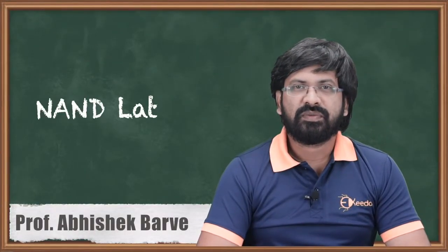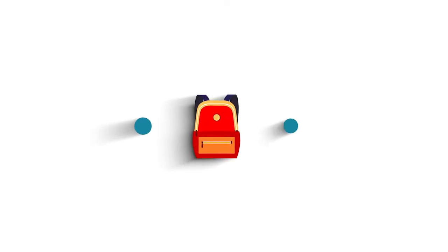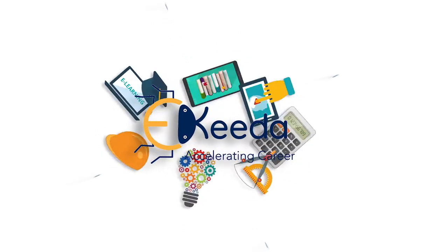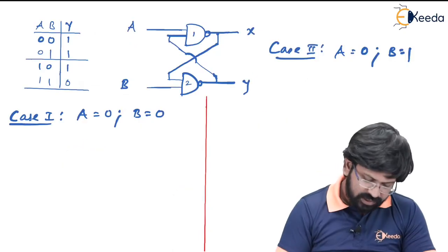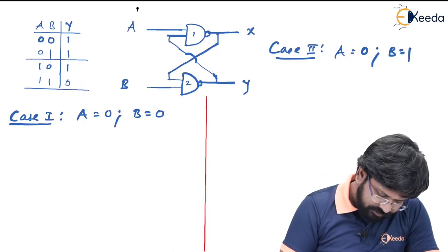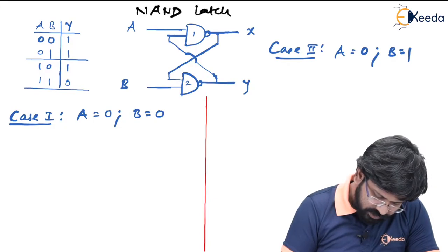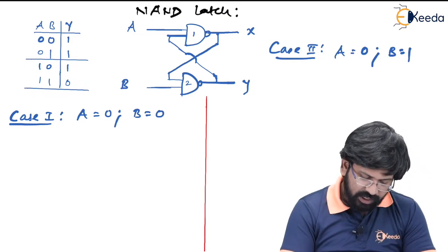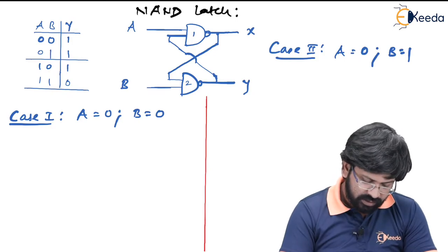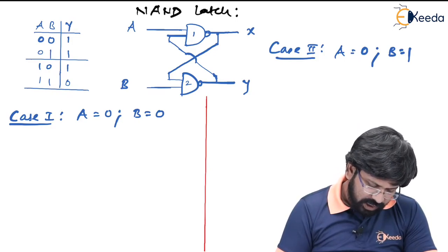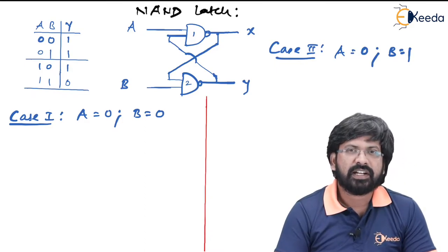Hello friends, in this video we will learn the working of a NAND latch. So let us understand a NAND latch. As you can see, the NAND latch is a combination of two NAND gates which are cross coupled. To start with this NAND latch, first of all let us review the NAND gate truth table.